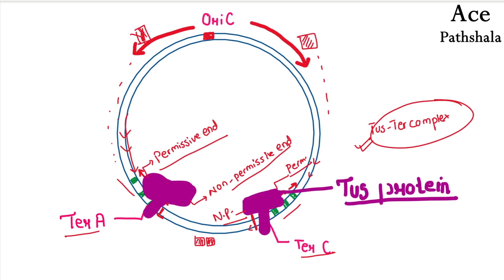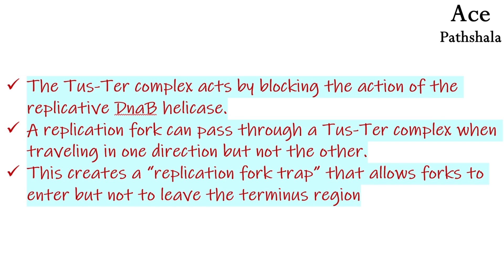After the DNA replication halts and the replication process does not proceed further, the DnaB helicase proteins also become non-functional and stop performing their function. This is the phenomenon by which E. coli DNA replication is terminated. The TUS-Ter Complex acts by blocking the action of the replicative DnaB helicase. The replication fork can pass through a TUS-Ter complex when travelling in one direction but not the other.